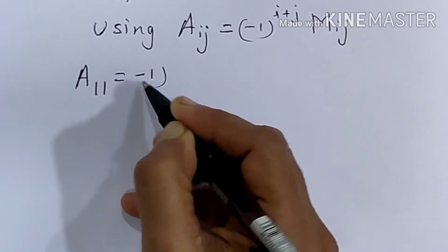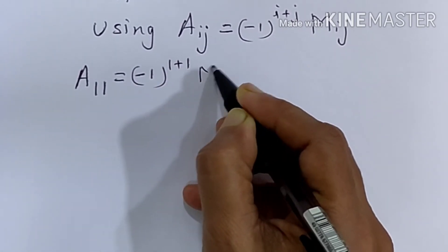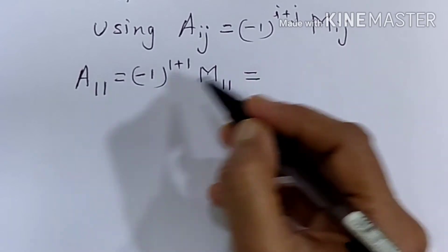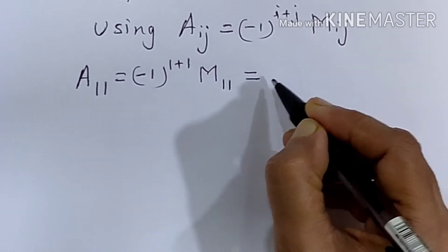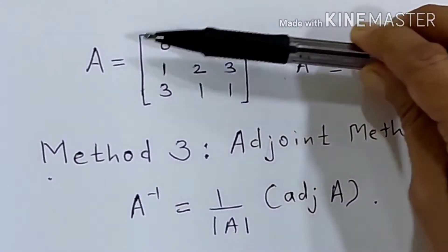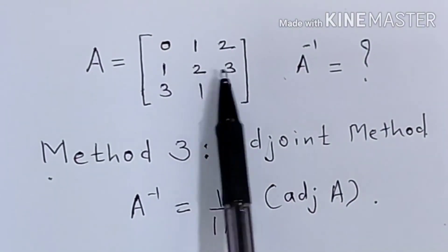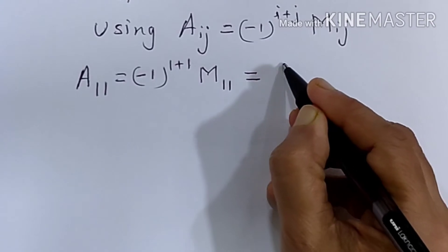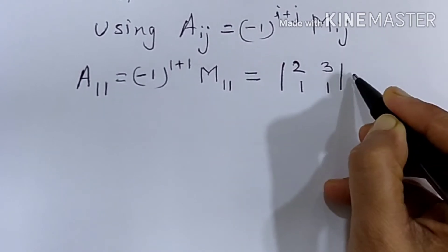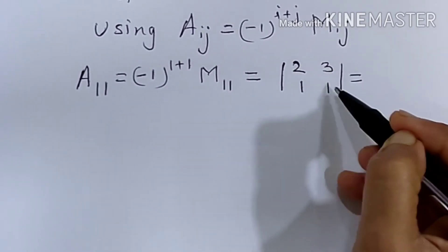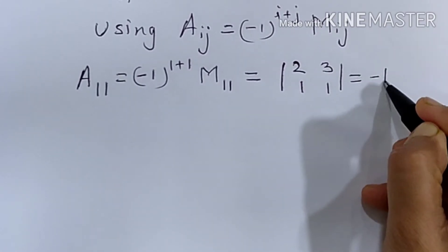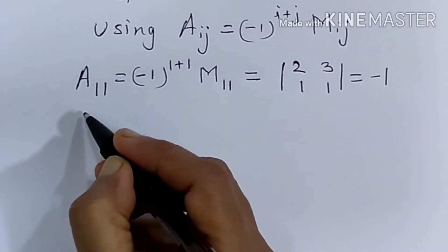Let's start with the first cofactor, A11. A11 is equal to minus 1 raised to 1 plus 1, into M11. That gives us plus, since the power is even. M11 is obtained by deleting the first row and first column, giving us the determinant with elements 2, 3, 1, 1. The value is 2 into 1 minus 3 into 1, which is 2 minus 3, equal to minus 1.